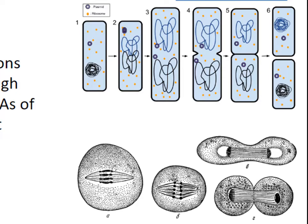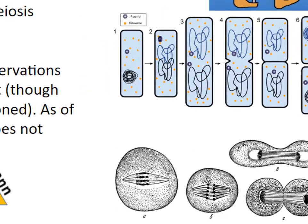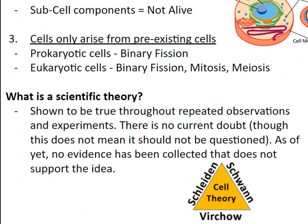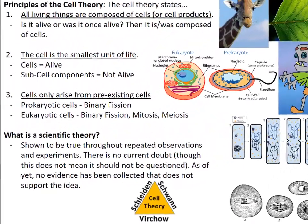This does bring up the philosophical debate of how the first cell was ever created. It's important to reiterate what a scientific theory is versus the daily use of the word. In our daily use, the word theory might be used as a synonym for guess, but in science, a scientific theory is shown to be true throughout repeated observations and experiments. There is no current doubt, though this does not mean it should not be questioned or tested. As of yet, no evidence has been collected that does not support the cell theory.